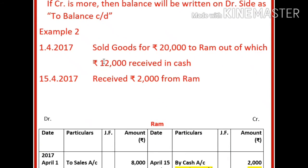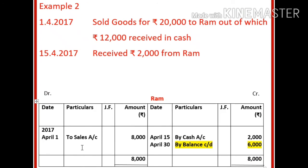For example, with RAM, during this month we have two transactions. In the first transaction, we posted 'to sales 8,000' — sold goods for rupees 20,000 to RAM, out of which rupees 12,000 received in cash, so only rupees 8,000 were debited to RAM. Then on the 15th, received rupees 2,000 from RAM — posted as 'by cash account.' If we balance this account: 8,000 minus 2,000, the difference is 6,000. The debit side is more, so the balance of 6,000 will be written on the credit side as 'by balance carried down.'